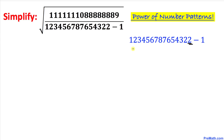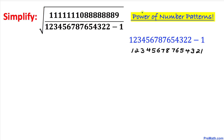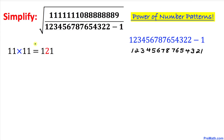So that number is going to become 1 2 3 4 5 6 7 8 7 6 5 4 3 2 1. Now let's talk about the power of these number patterns.